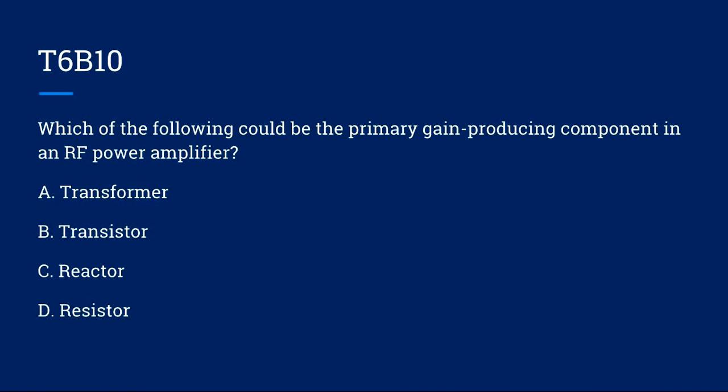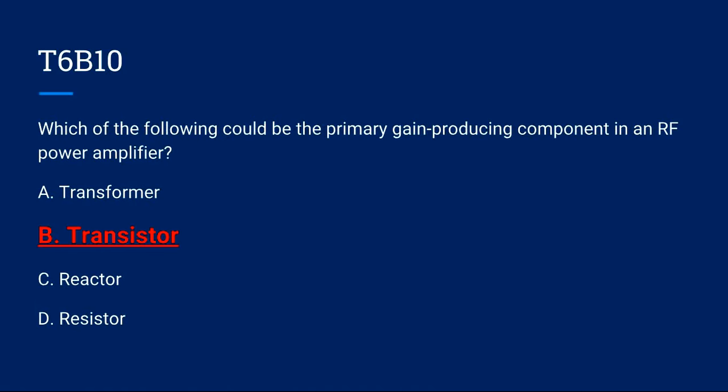T6B10: Which of the following could be the primary gain-producing component in an RF power amplifier? A, transformer. B, transistor. C, reactor. Or D, resistor? The correct answer is B, transistor.